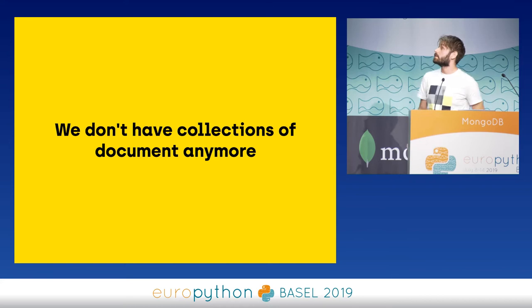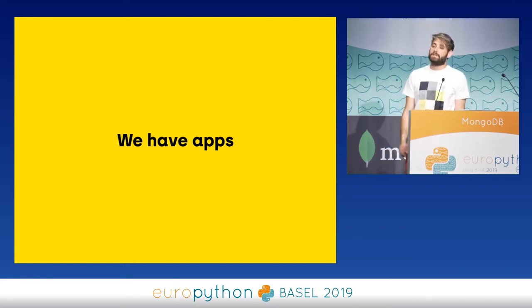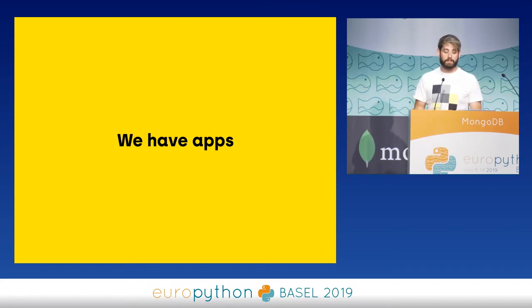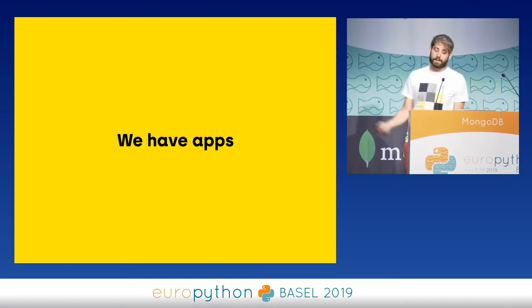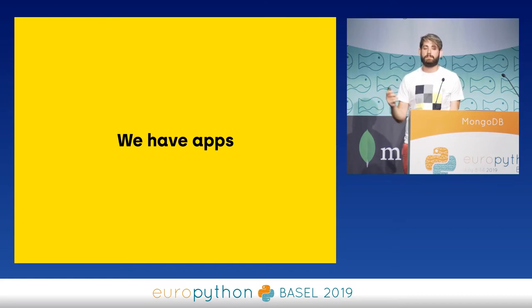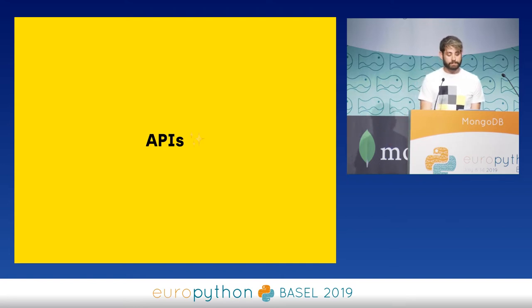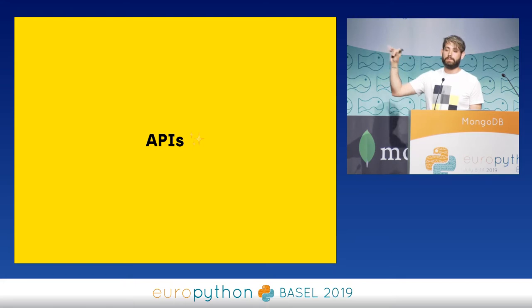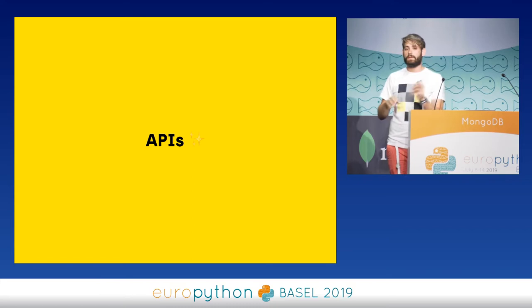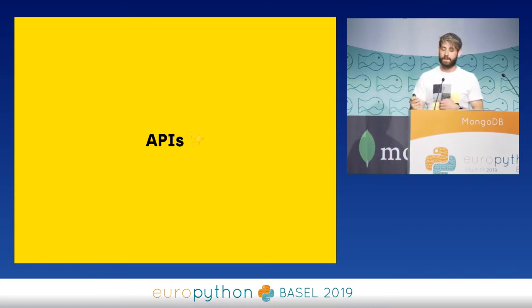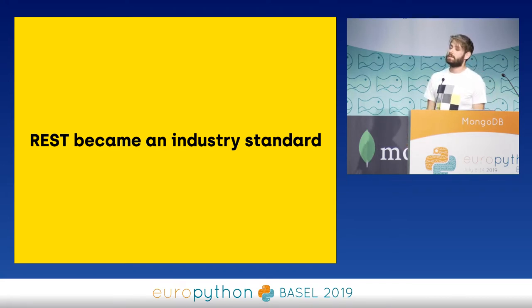We start having mobile websites and mobile applications. In current days the web is still evolving. We don't have collections of documents anymore — we have apps, and these apps are really complex. Even a simple website like my personal site was a single-page application with an API behind it. It's not just HTML and CSS. It also makes sense to build applications now because the developer experience is much nicer. So we start creating APIs to allow a client to communicate with a backend, or communicate between different backends, or connect a front-end team and a back-end team instead of building a monolith.